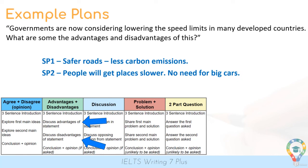SP1: advantages of lowering speed limits — safer roads, as people drive slower there'll be fewer accidents — as well as less carbon emissions, since driving faster uses more fuel and produces more pollution. SP2: disadvantages — people are going to get places slower, there'll be less need for bigger cars, and what will happen to companies that make them? Could it mean people lose their jobs? So that's another example of a plan: no opinion, just SP1 and SP2.